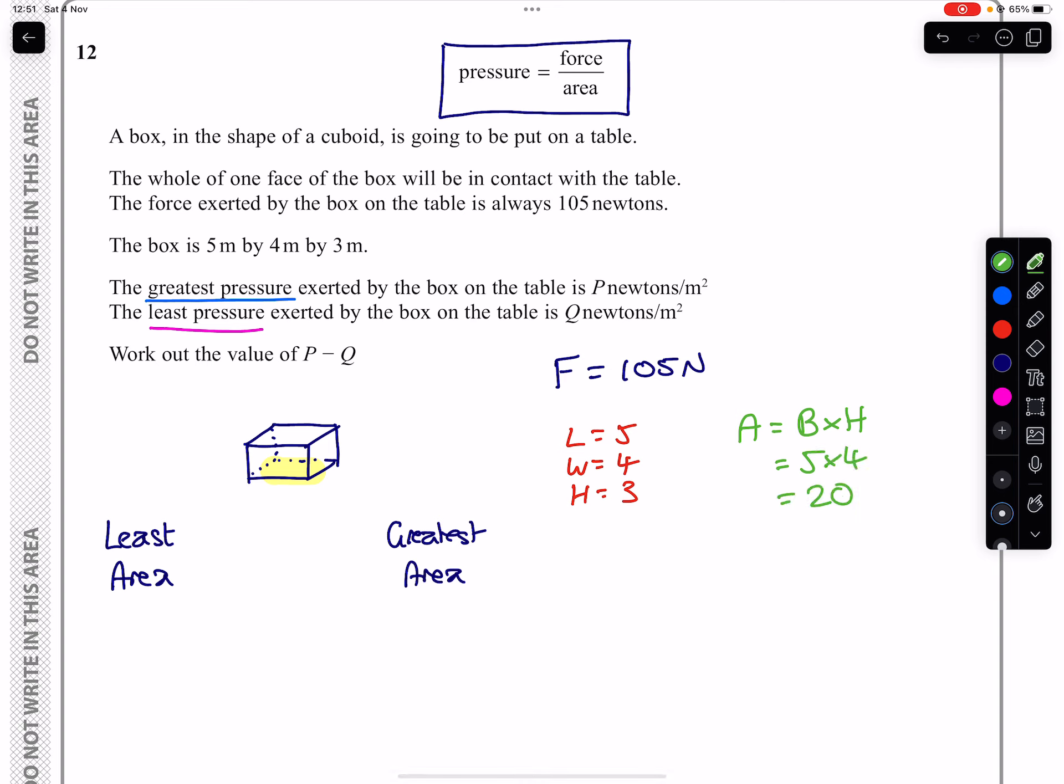So 5 times 4 for 20 meters squared, that is our greatest area. So A equals 20 will be what we will use there.